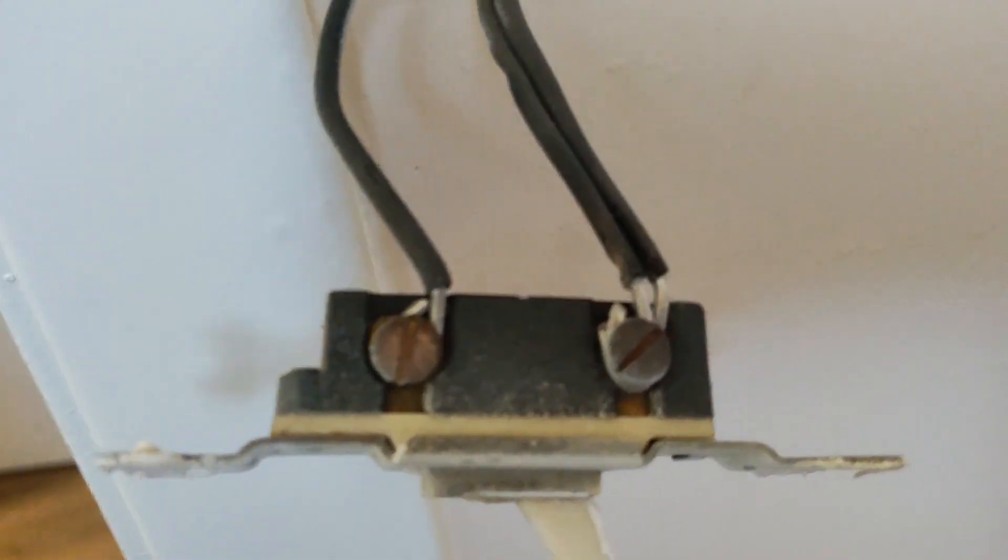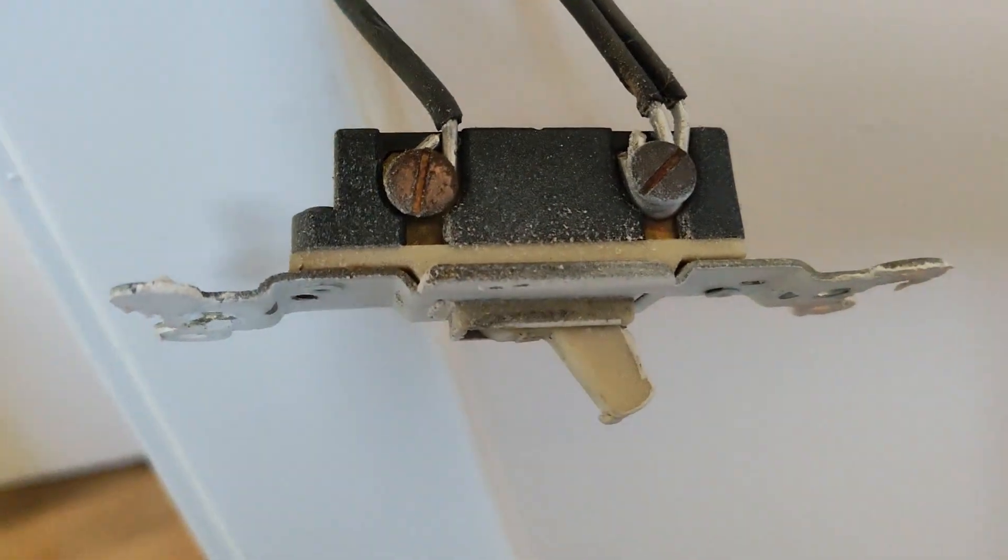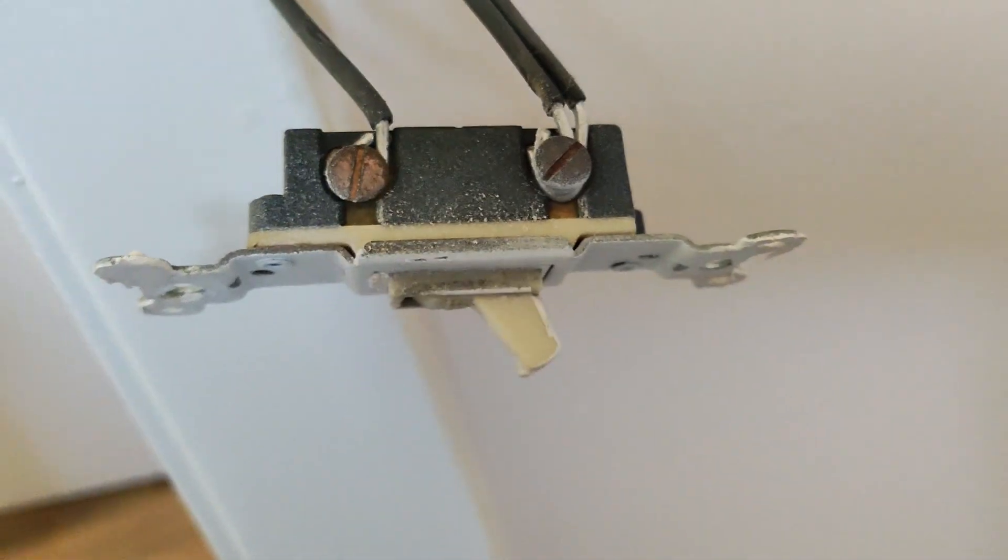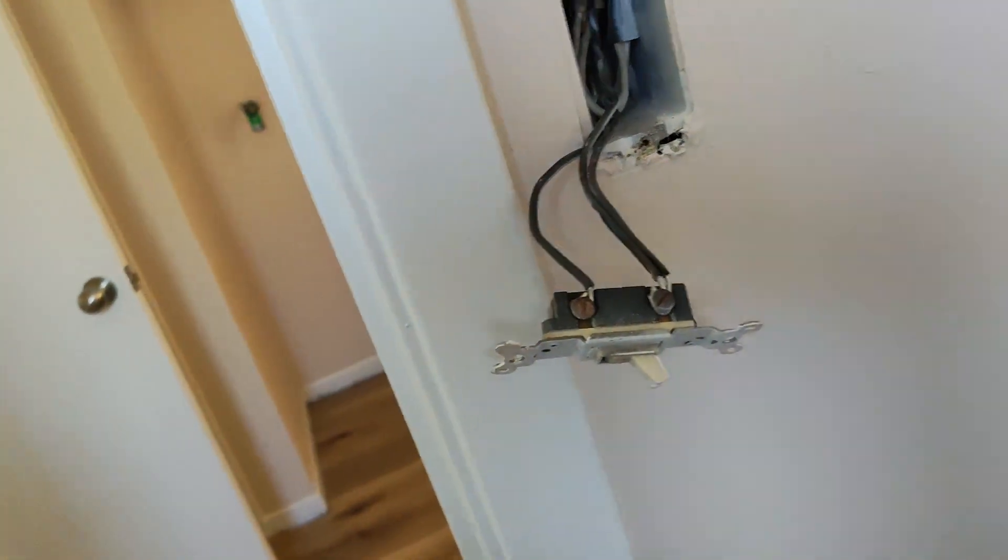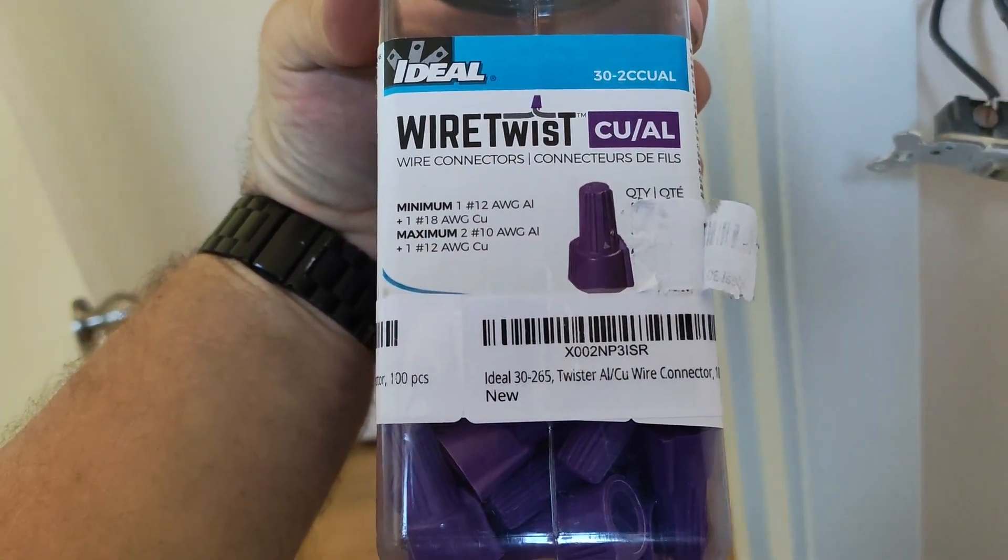Underneath one of these purple wire nuts, and then we'll do the same thing with the switch leg. I will say these purple wire nuts are super expensive - they're about eight bucks for two of them at Lowe's right now at the time of the recording of this video.